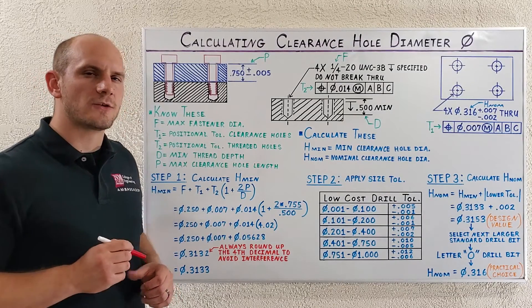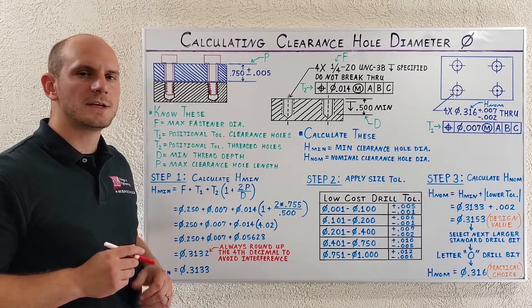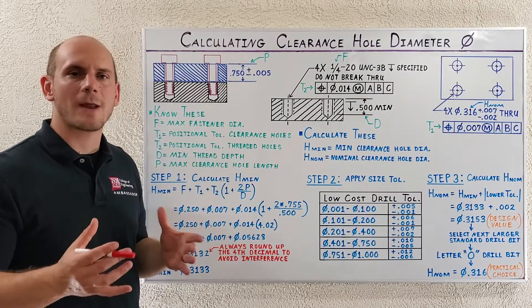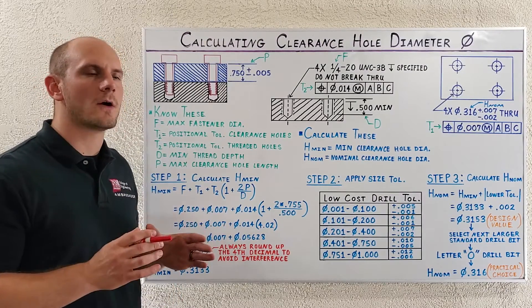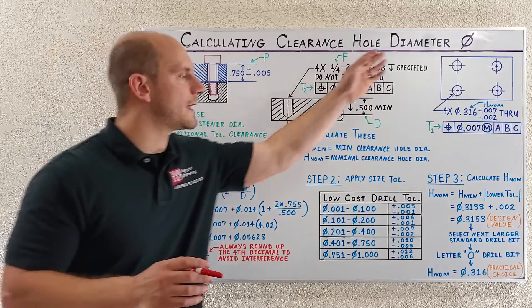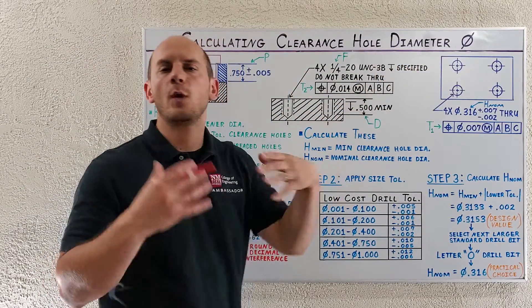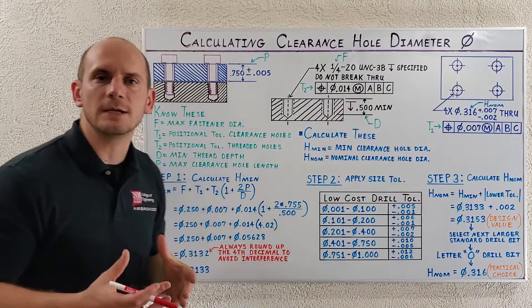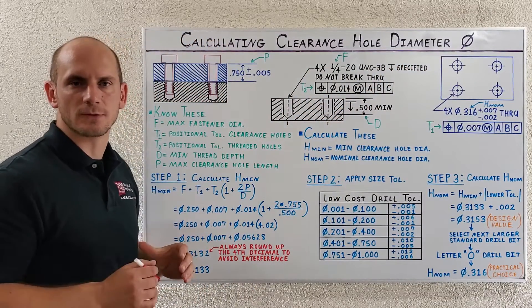Let's get straight to the point. Today we're going to be talking about how to calculate our clearance hole diameters when we use GD&T positional tolerancing.